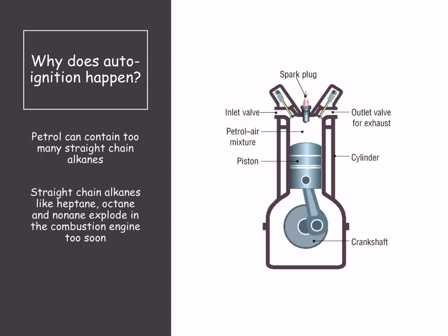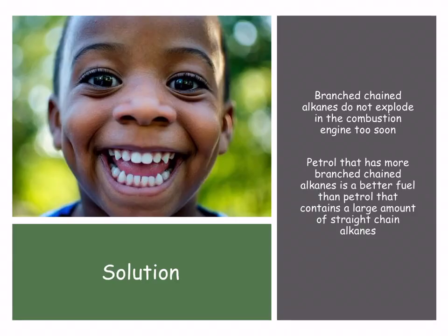Petrol contains many different straight-chain alkanes — such as heptane, octane, and nonane — with seven, eight, and nine carbon chains respectively. These straight-chain alkanes explode in the combustion engine too soon, and as a result do not allow the engine to work in the manner that we want.